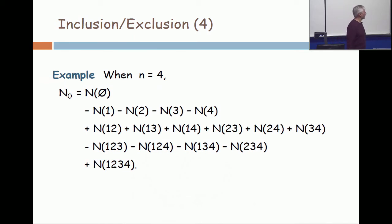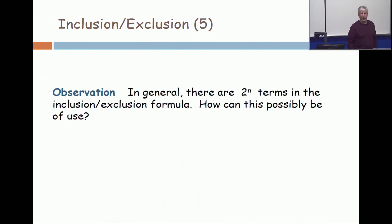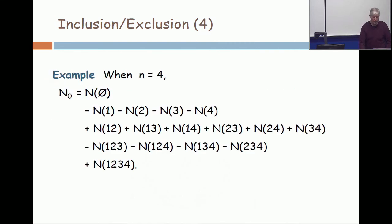Here's n=4. There are sixteen terms. I didn't write n=5. But in general, they're 2^n, and how can this possibly be of use? So now let's back up to this. Look at this term right here. How could it possibly be simple to apply a formula that has this many terms in it?